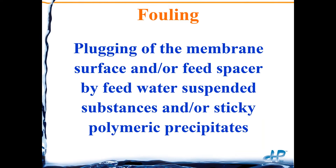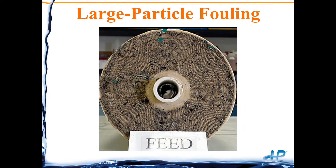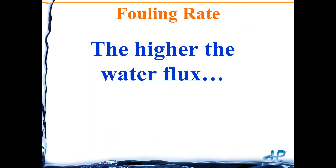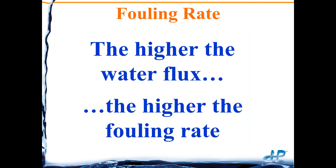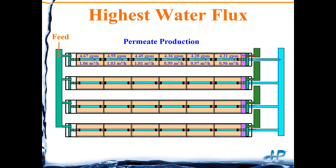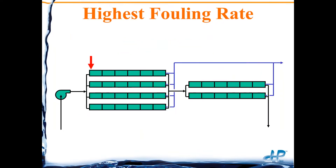Two problems we're going to talk about are fouling and scaling. Fouling is plugging of the membrane or feed channels by particles or sticky polymeric precipitates. The fouling rate is highest where you have the highest water flux — the highest permeate production — which occurs right at the very front of each pressure vessel. So the highest fouling rate is in the first inch or centimeter of the first membrane element in a traditional RO unit.